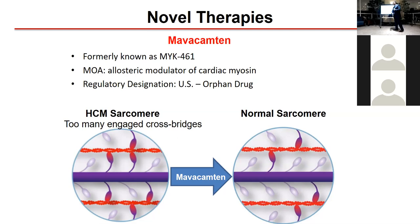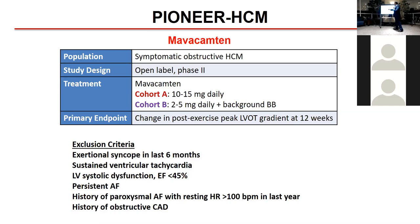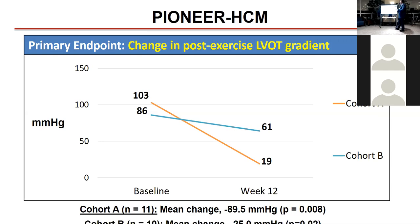A new drug, mavacamten, modifies how actin and myosin interact — decreasing contractility and improving relaxation. In HCM, cross-bridge formation is increased; mavacamten reduces cross-bridges, improving the energy state, diminishing contractility, and reducing gradients. This was tested in the PIONEER trial with different doses: in both cohorts gradients improved, and in the high-dose group, gradients fell from approximately 100 to the 20s mmHg.